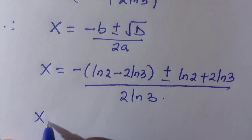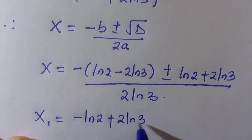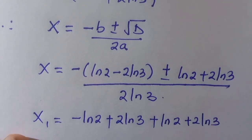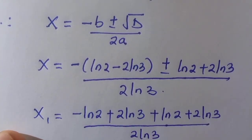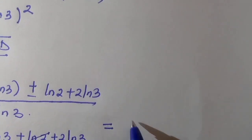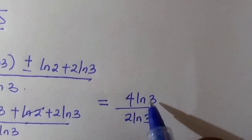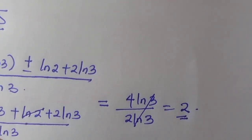For x1, taking the positive sign: minus ln 2 plus 2 ln 3 plus ln 2 plus 2 ln 3, divided by 2 ln 3. The minus ln 2 and plus ln 2 cancel, leaving 2 ln 3 plus 2 ln 3 equals 4 ln 3, divided by 2 ln 3. The ln 3 terms cancel and the result is x1 equals 2, which is a real solution.